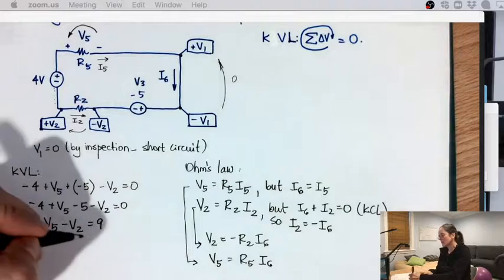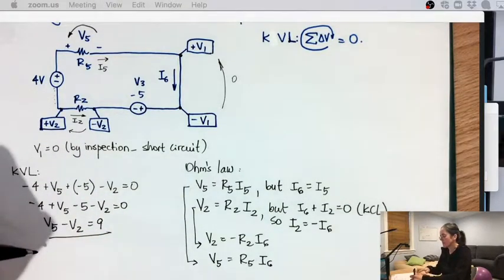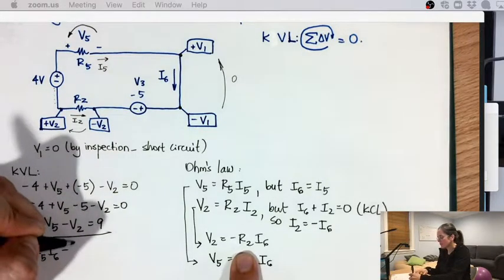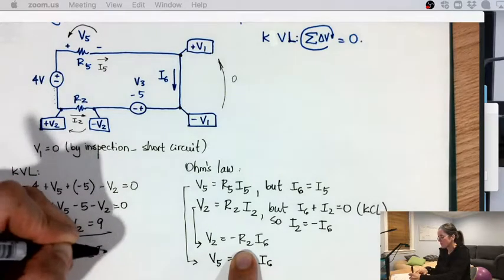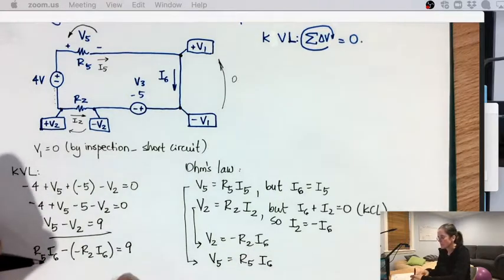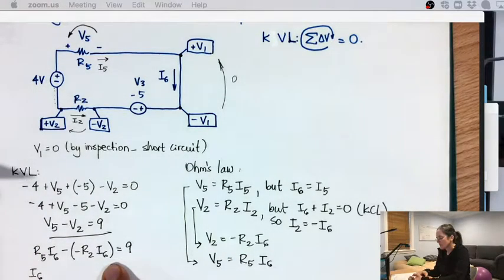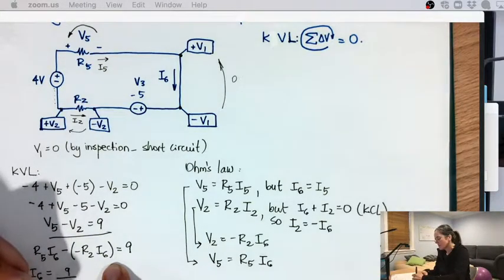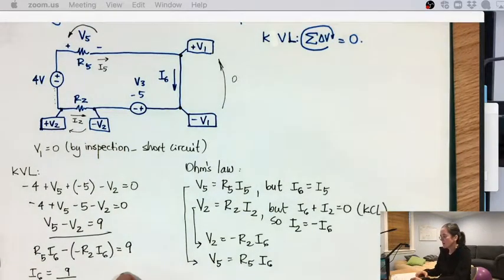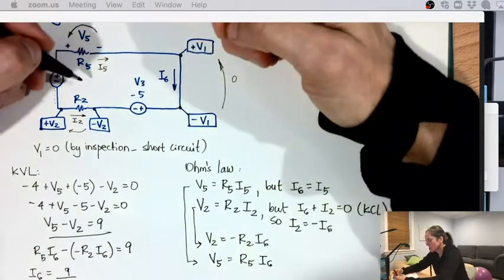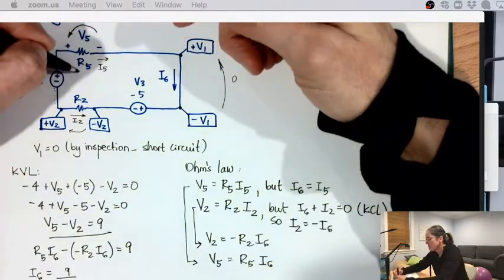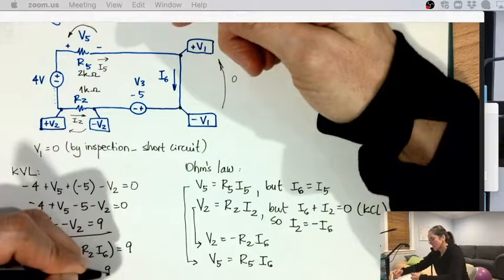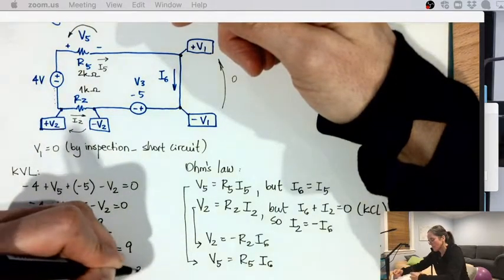Now I'm going to go back to this equation here and say V5, which is R5 I6, minus V2, which is minus R2 I6, is 9. So I6 is 9 divided by R5 plus R2. Oh my gosh, I don't know R5 and R2. So I'm going to call this guy 2K and this guy 1K. So 9 divided by 3K, it's going to be 3 milliamps.